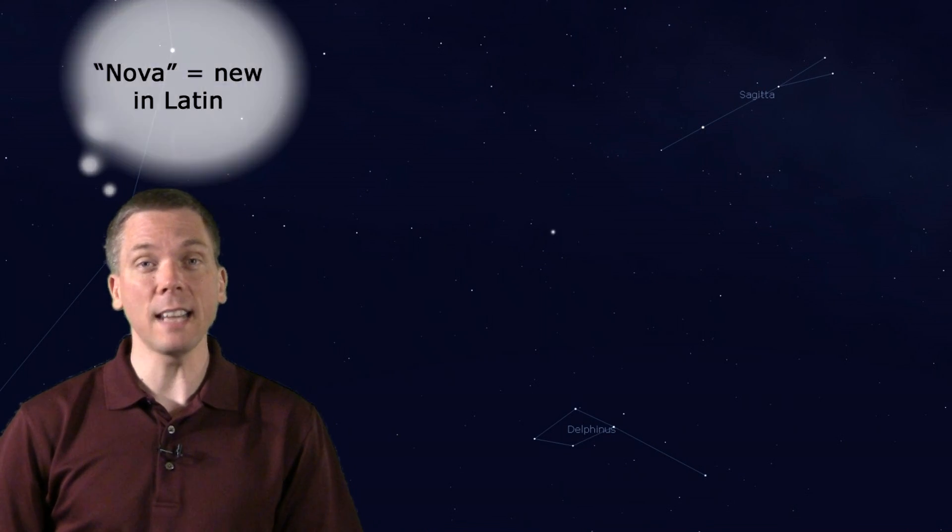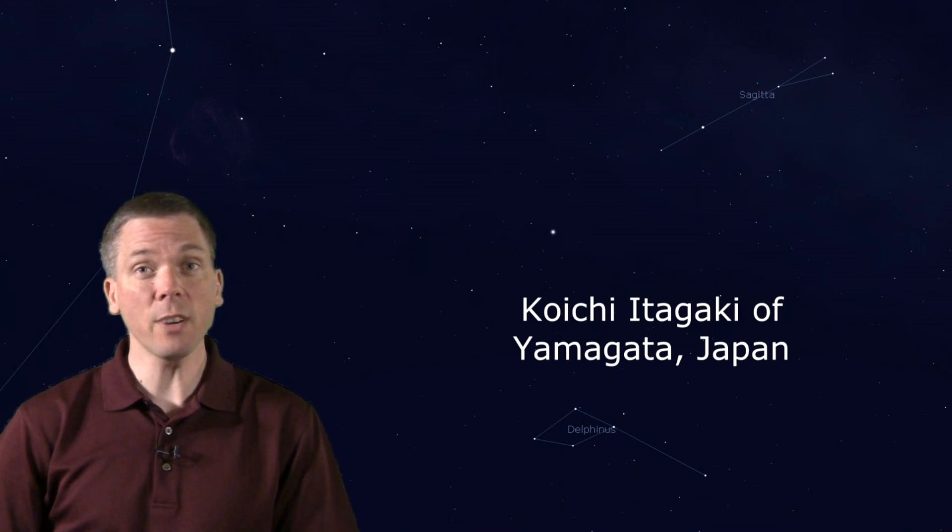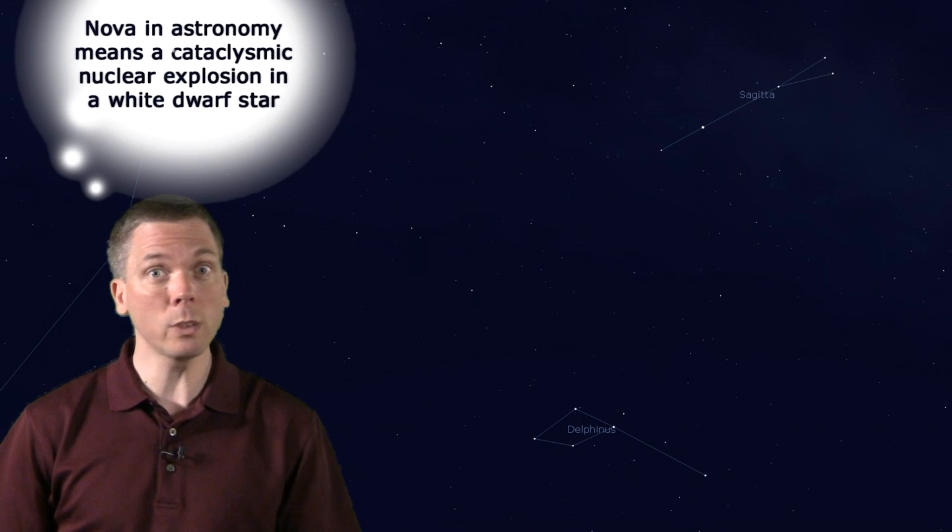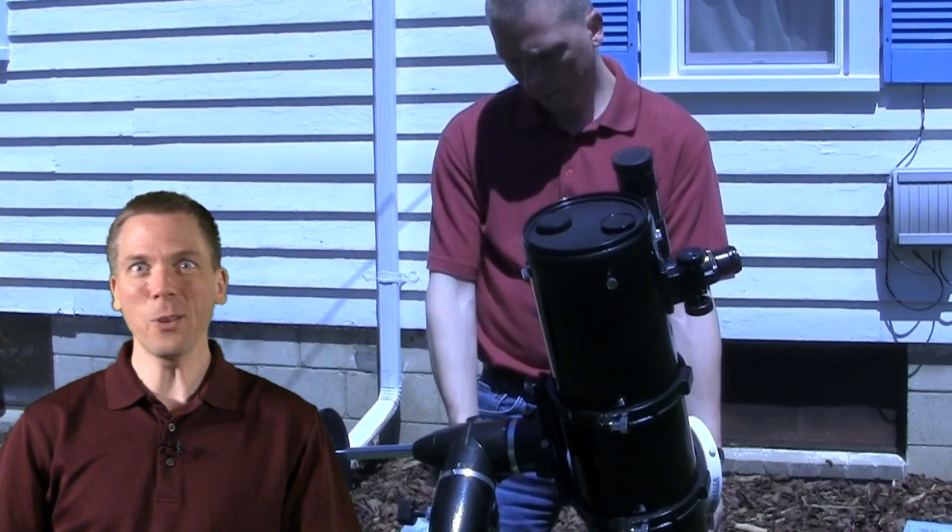On August 14th, Japanese amateur astronomer Koichi Itagaki of Yamagata discovered a nova using a 180mm reflector telescope. That's right, a plain old amateur astronomy sized telescope, not much larger than this one. How cool is that?